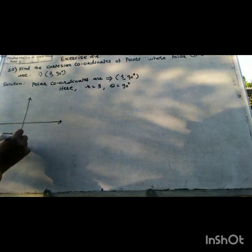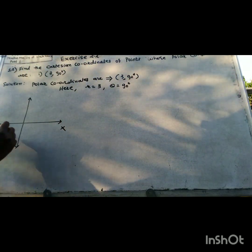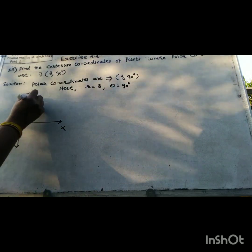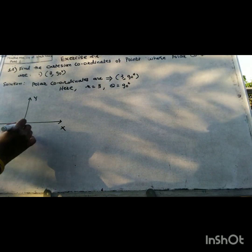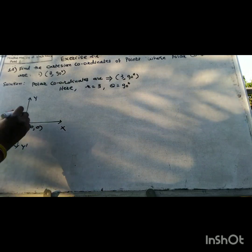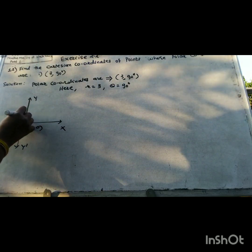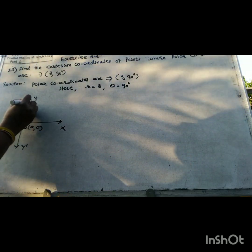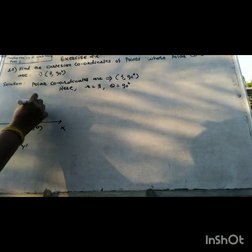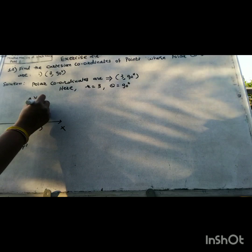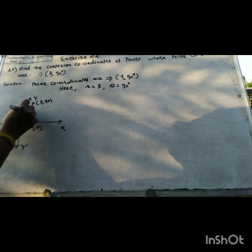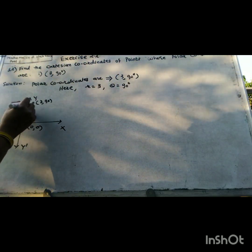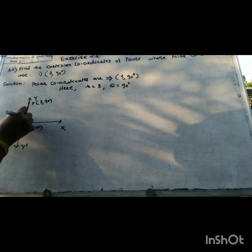In the coordinate system we have the x-axis, negative x-axis, y-axis, and negative y-axis, with origin having coordinates (0, 0). Suppose point P has polar coordinates (3, 90°). Here 3 means the radius, so r is equal to 3.